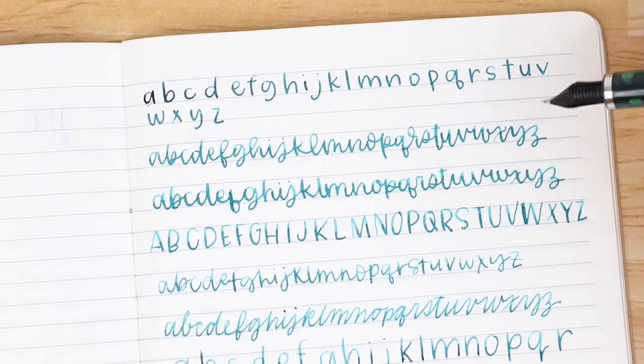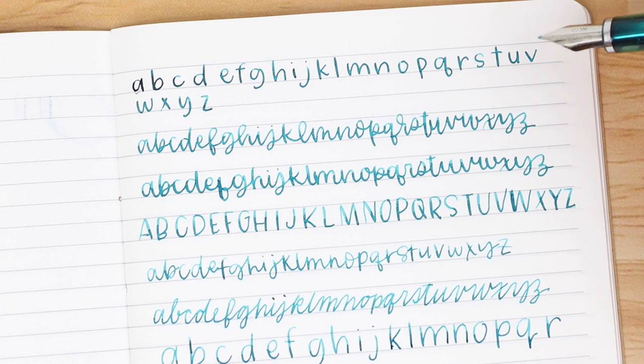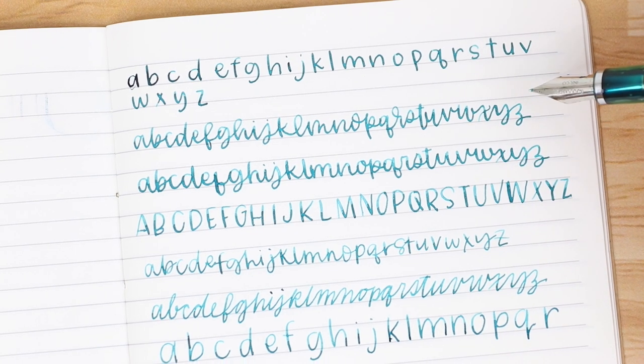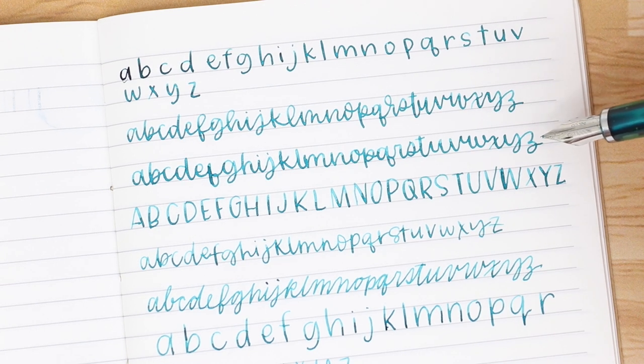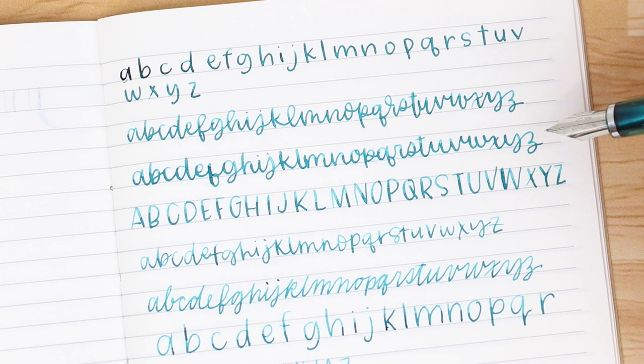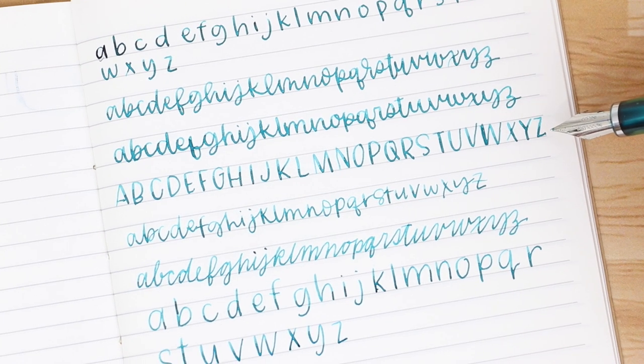All right, so here we have just a really simple lowercase alphabet. Here we have more of a casual, kind of like a script style. This is what I was saying is really similar to my Eloise hand lettering style of monoline worksheets.